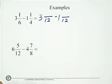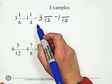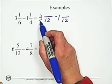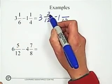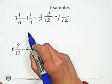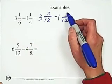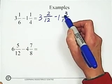And second, convert each mixed number to its equivalent. So 3 and 1 over 6 equals 3 and 2 over 12. And 1 and 1 over 4 equals 1 and 3 over 12.